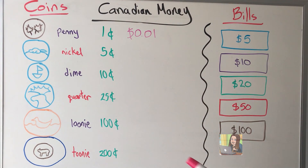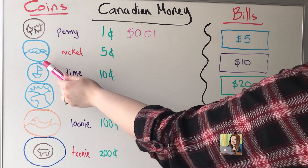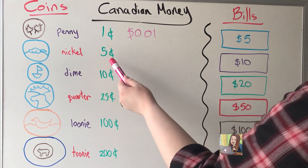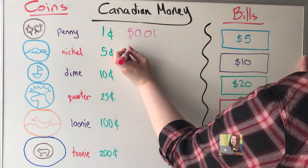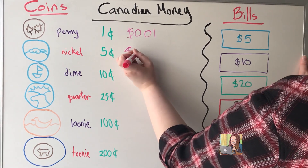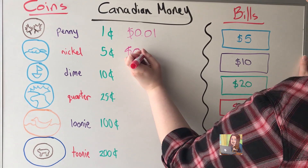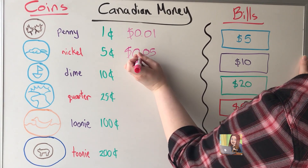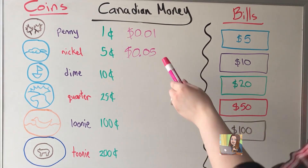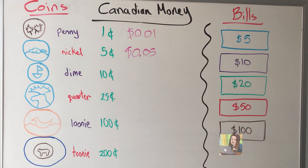The nickel, with the beaver on it, is worth five cents, or written as dollars, $0.05. It's important to know these decimals as well because it helps us add money a little bit easier.